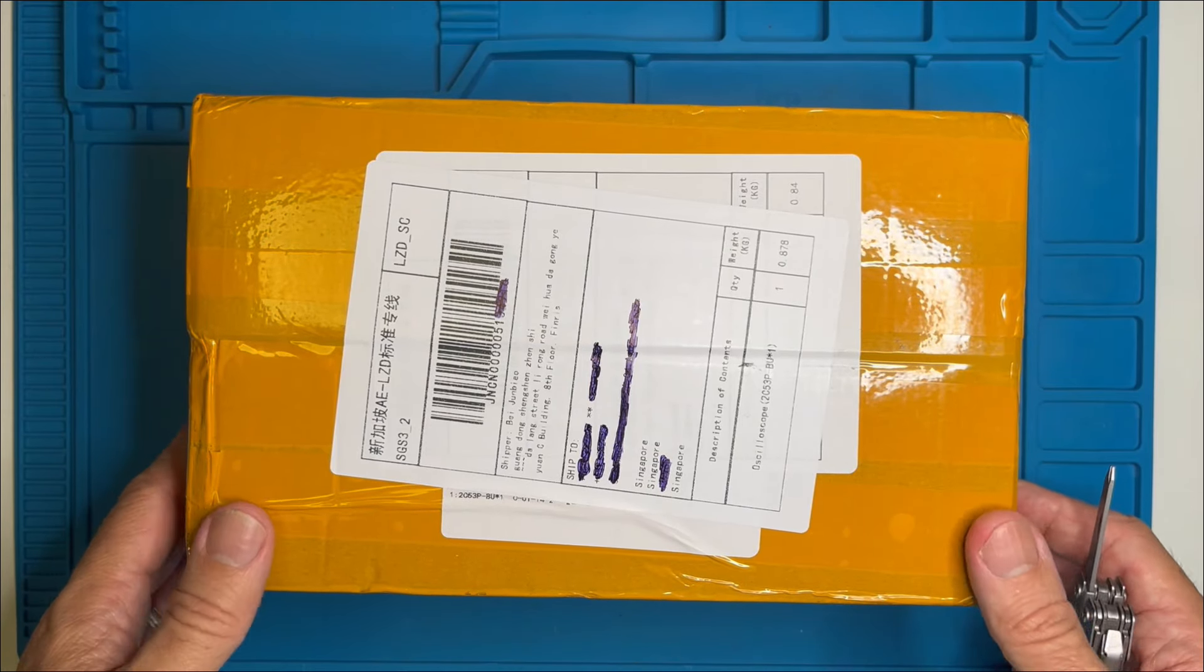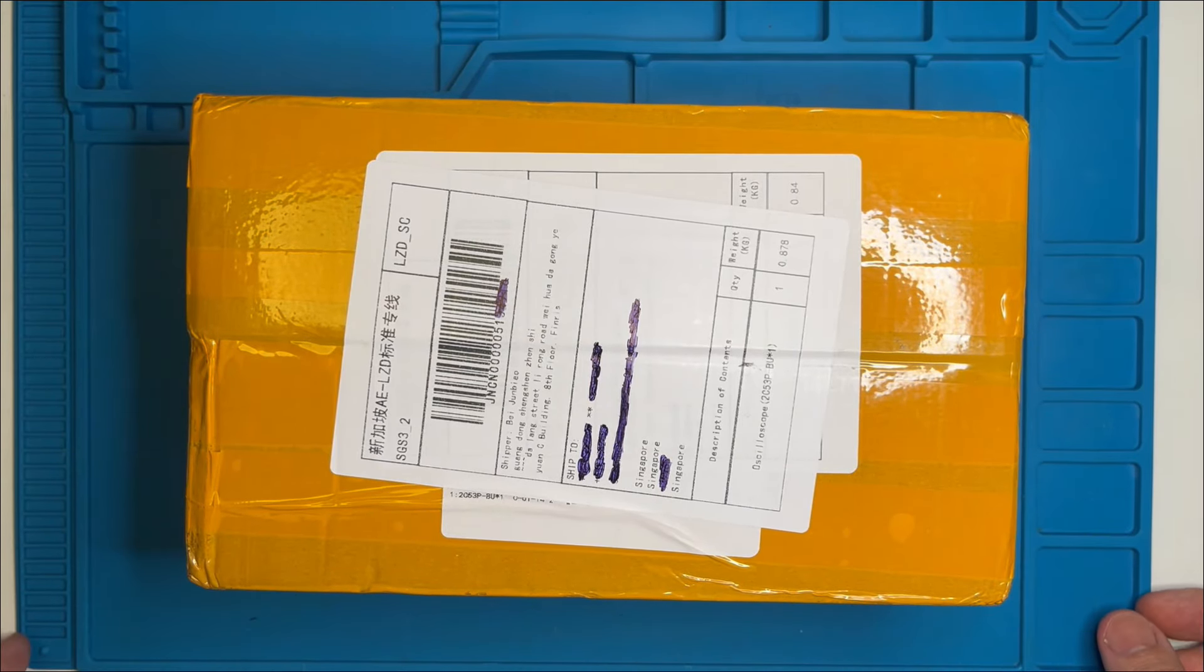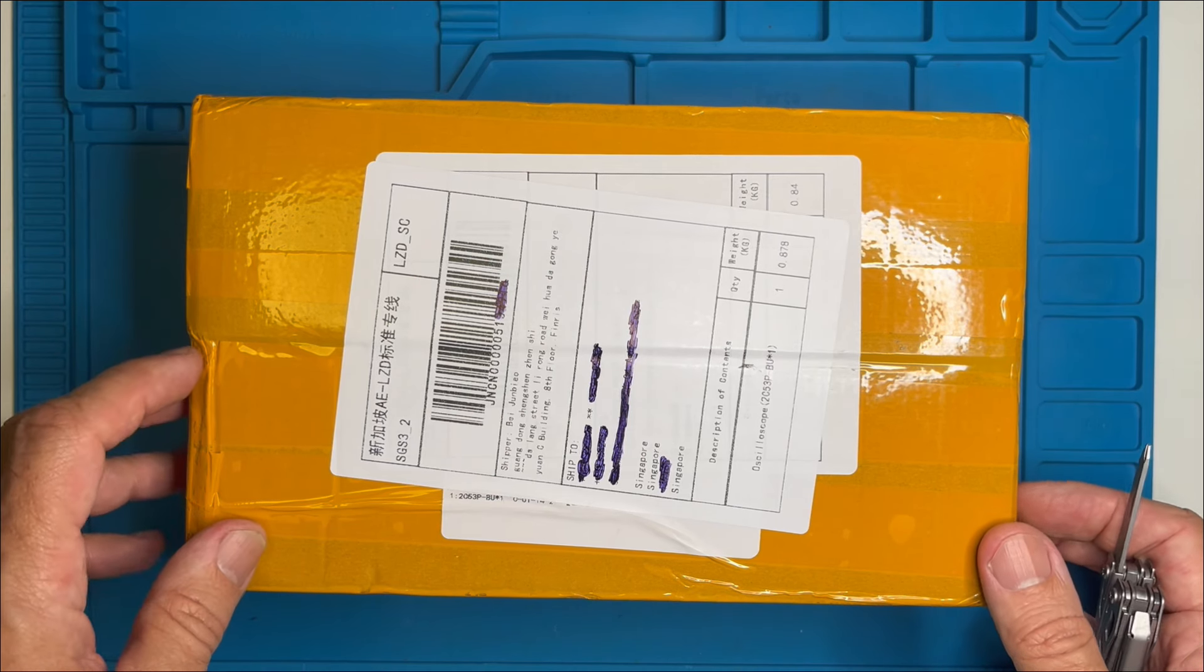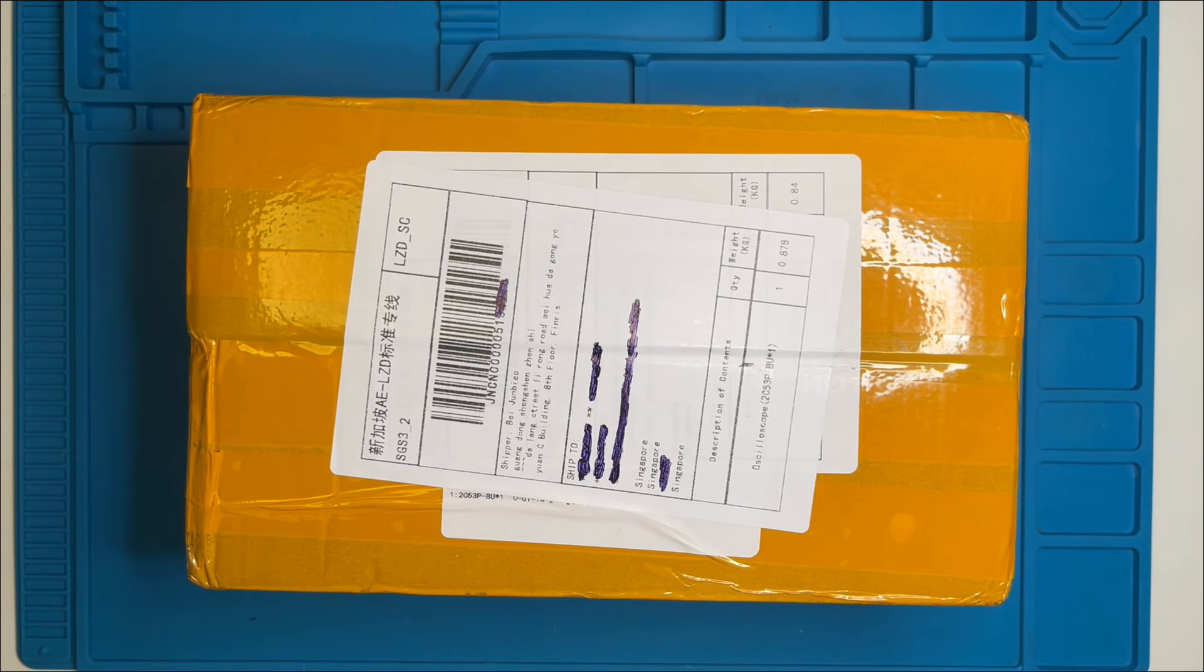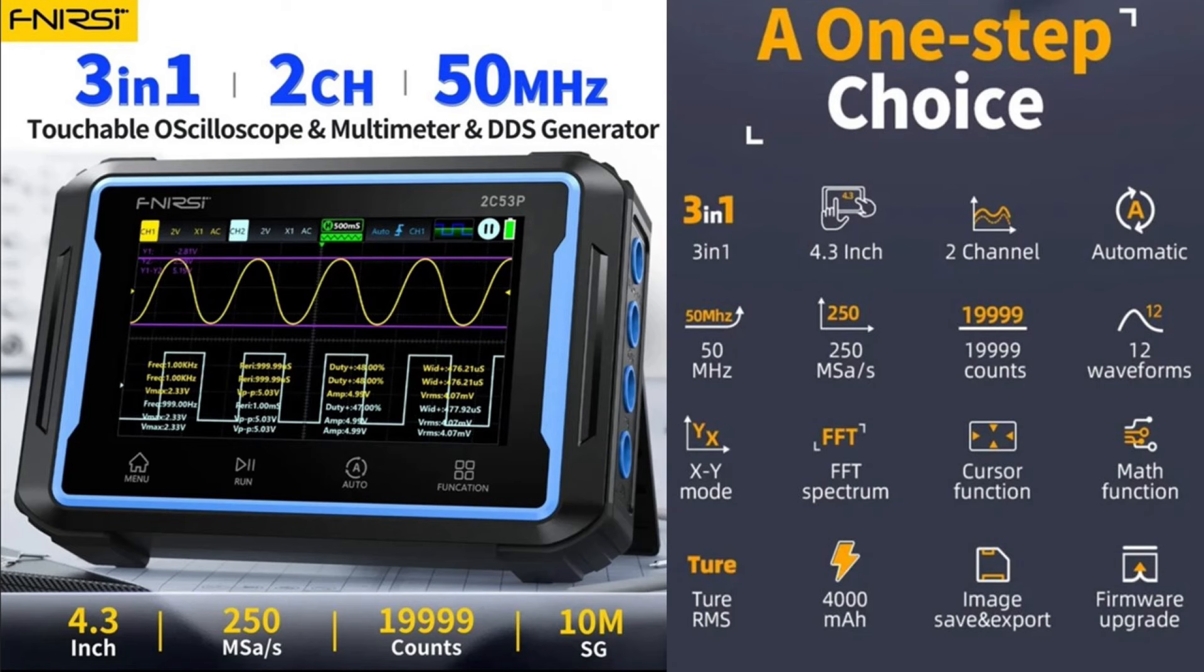Hello there! In this video I'm going to do another review of a FNIRSI multifunctional device. This time it's the FNIRSI 2C53P, which is a 3-in-1 50 megahertz two-channel oscilloscope, 20,000 count multimeter, and 10 megahertz signal generator.